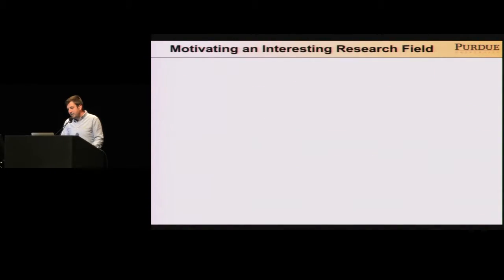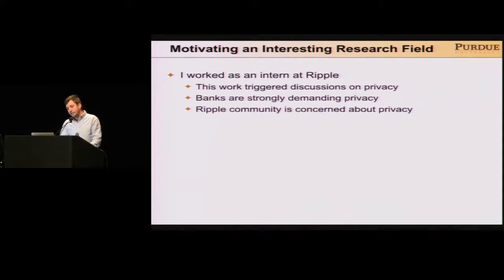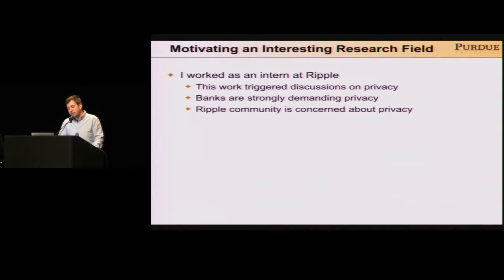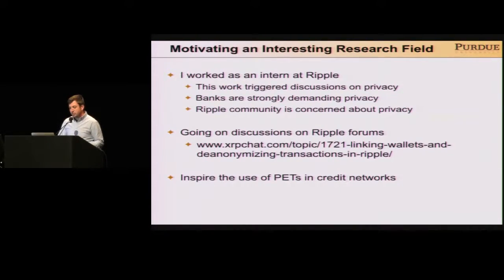We notified the results to the gateways and received answers from Bitstamp and RippleFox, both of which acknowledged our results. RippleFox actually decided to publish all their wallets after we notified them — that's why they appear all in green now. After this work, I got an internship at Ripple, where this work triggered interesting discussions about the necessity of privacy in credit networks. Banks were strongly demanding privacy, and the Ripple community is really concerned about the privacy problems of the current network. We believe this work should inspire the use of privacy-enhancing technologies in credit networks.